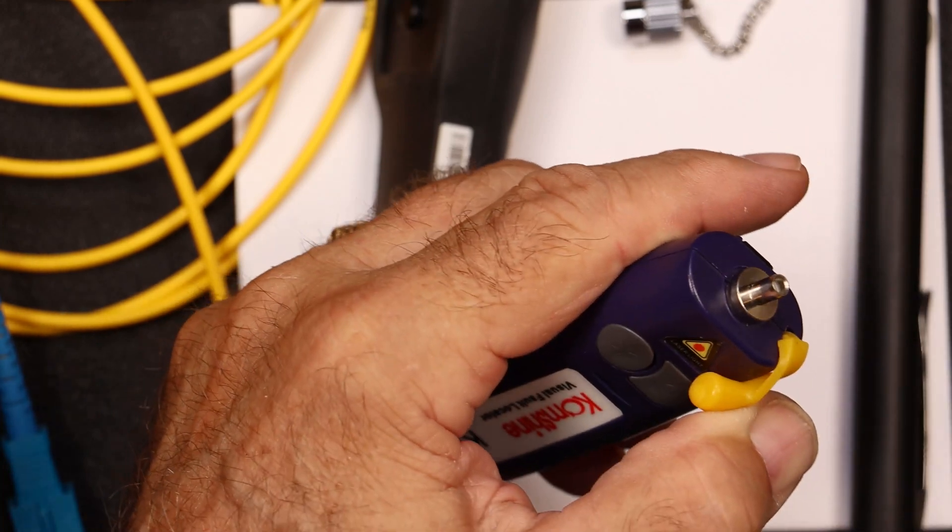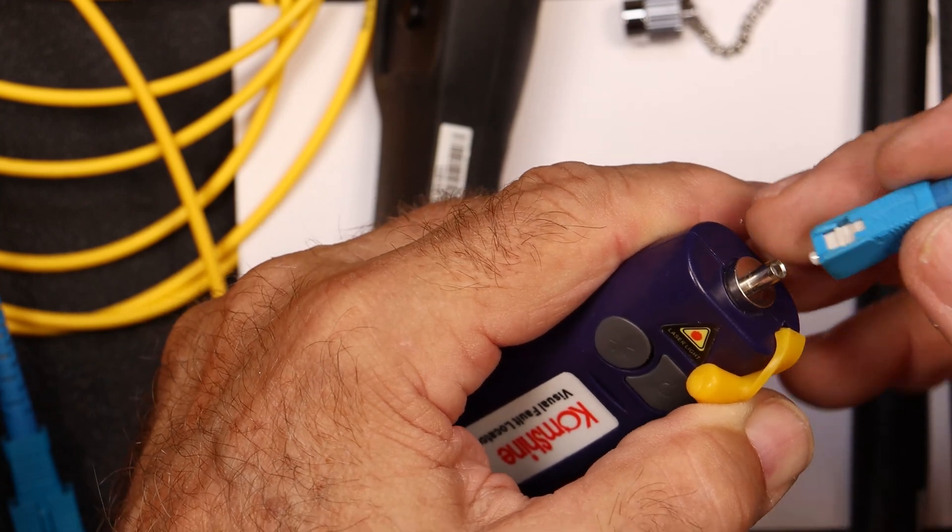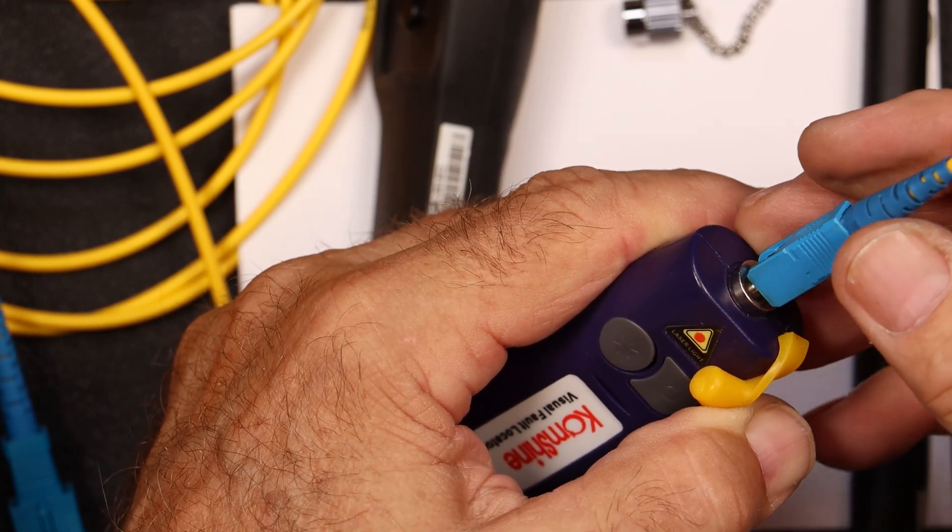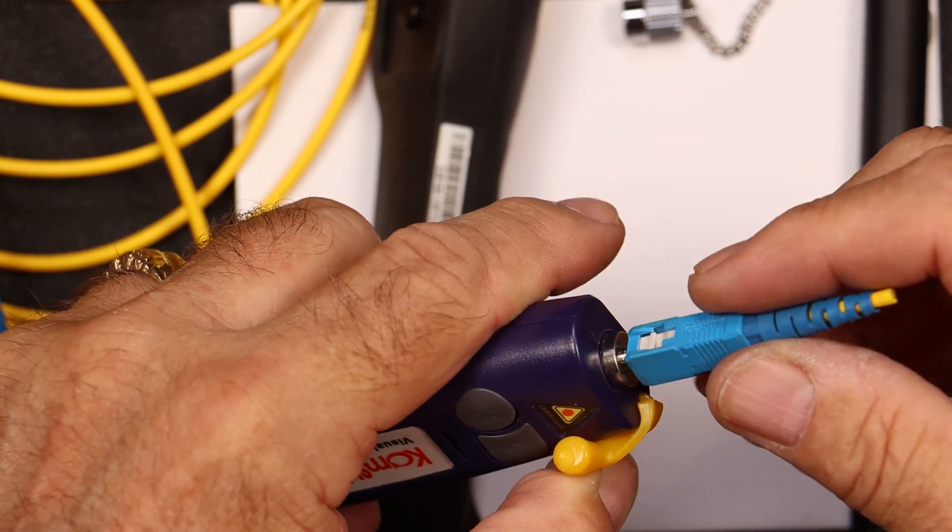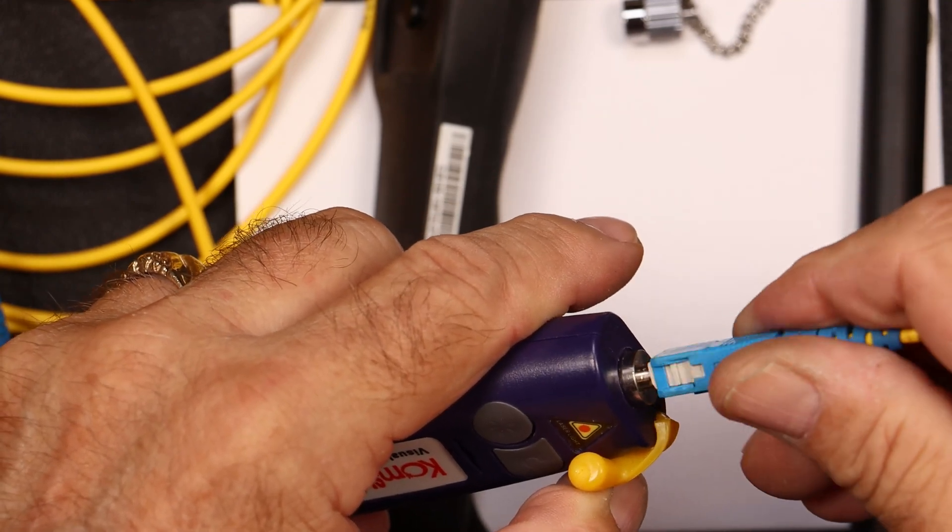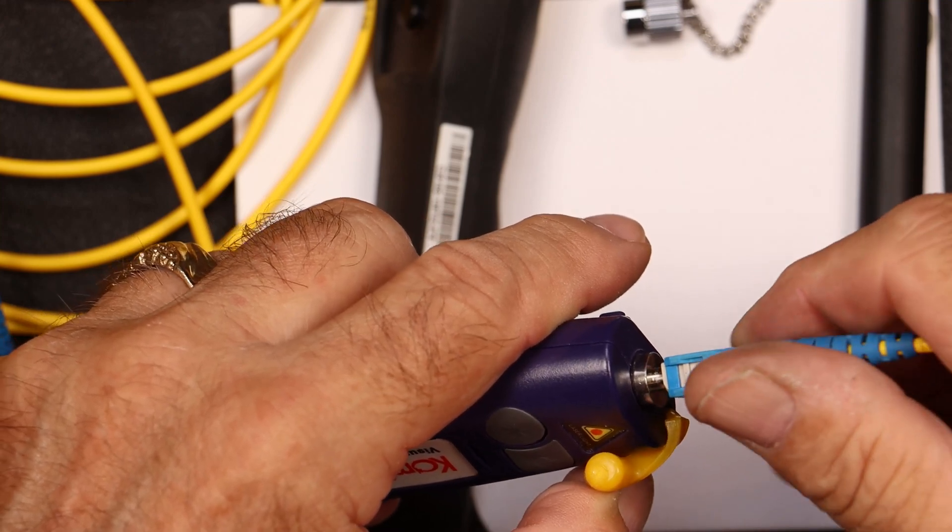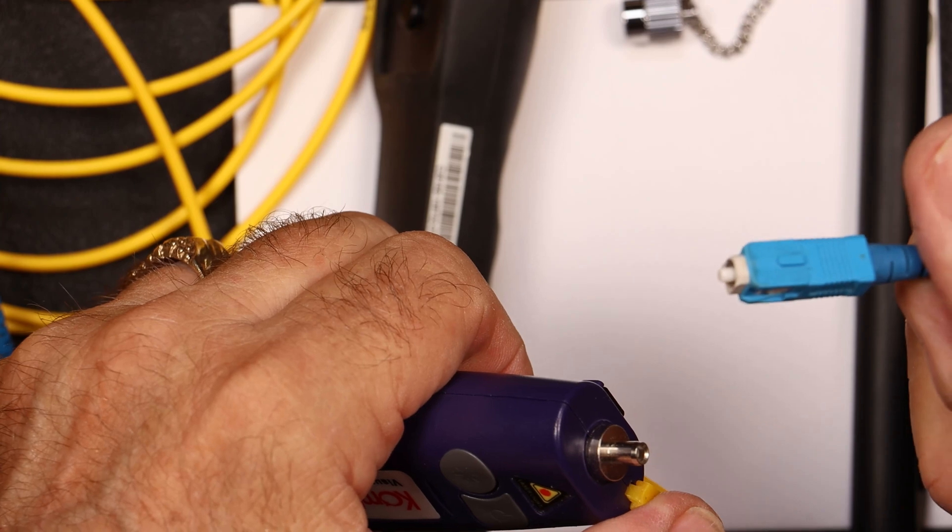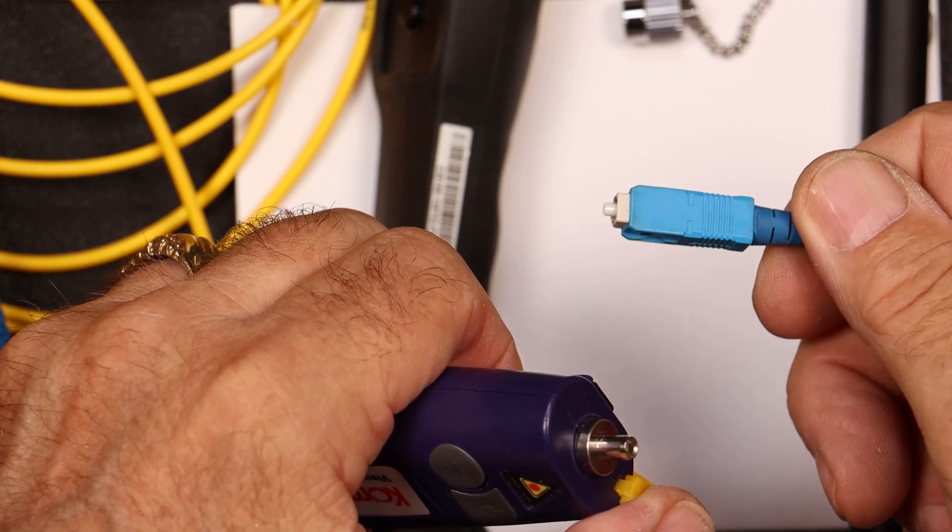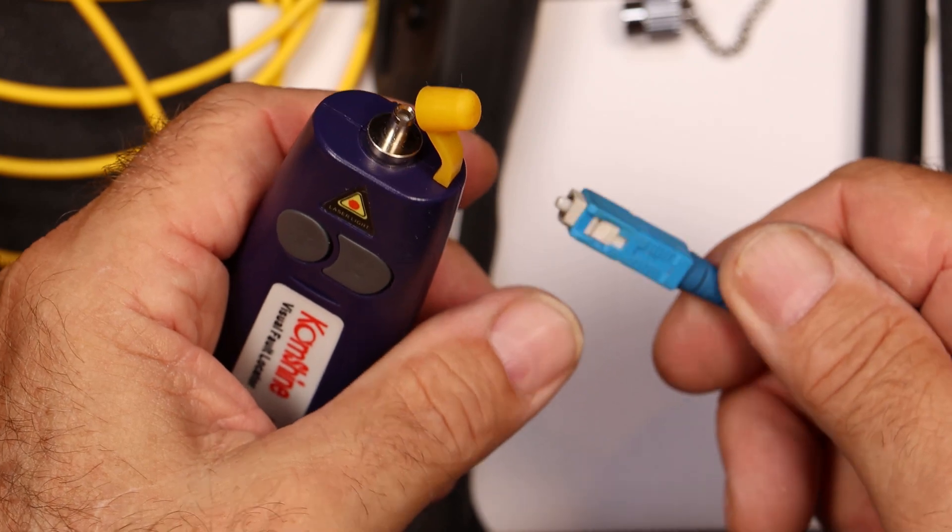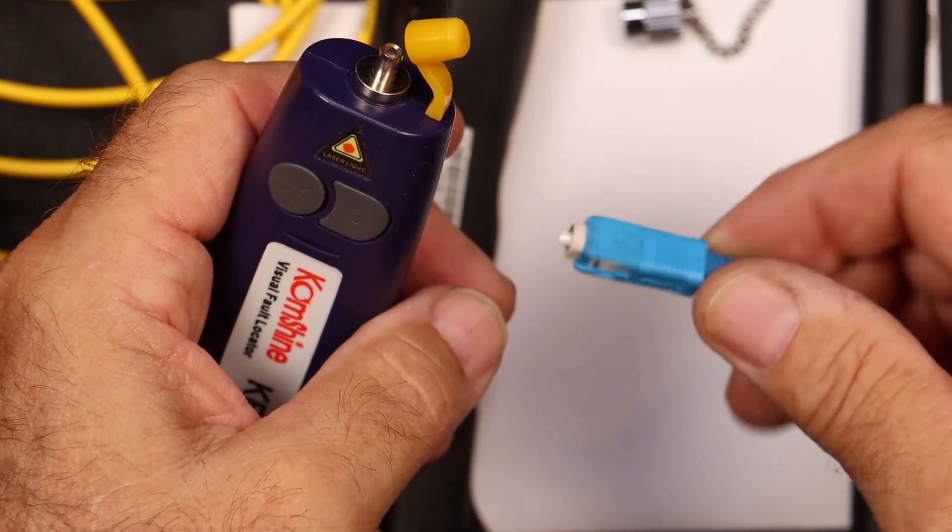But again, when you plug these in, if there's dirt on the end here, and you plug this in, and I'm not touching right now, but you plug it in. And then we tend to turn these. And what we're doing is we're just grinding that dirt into the face of the connector. If you're not good on inspecting these, when you plug them back into your patch panel, you've got a damaged connector. And now you have a problem with your circuit.